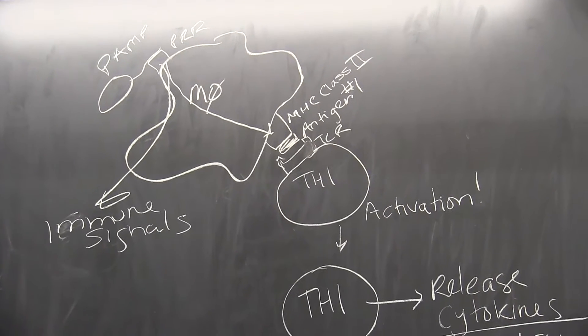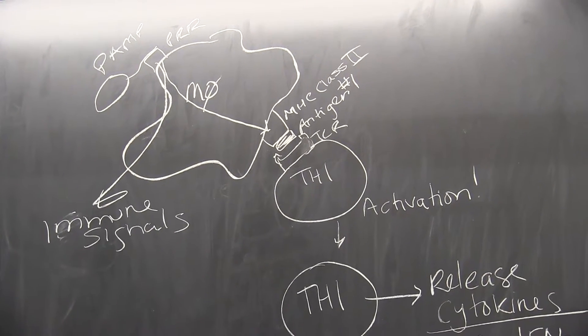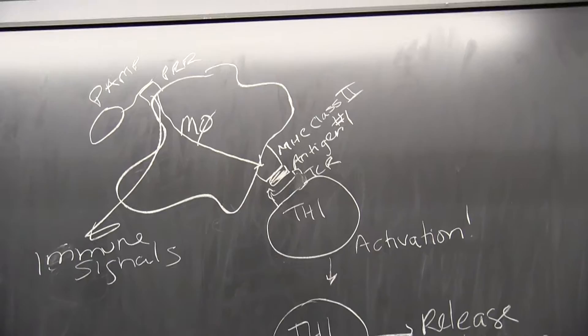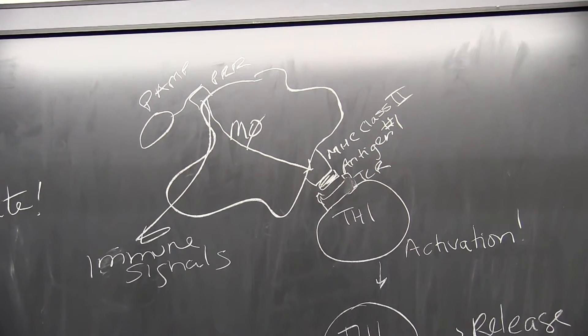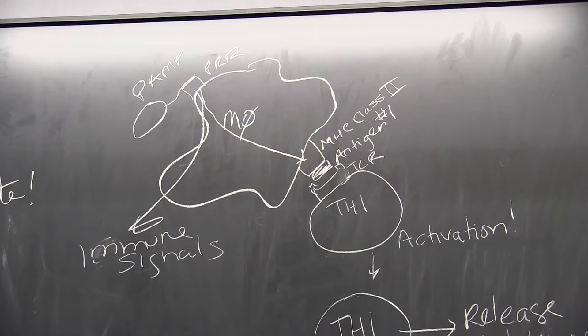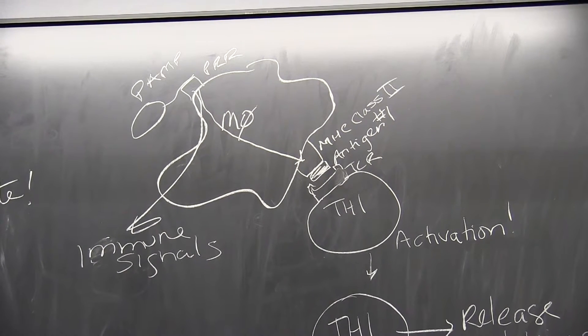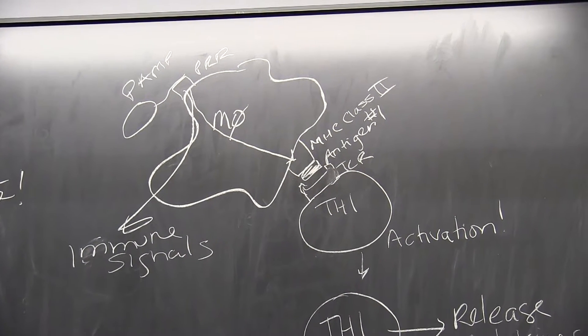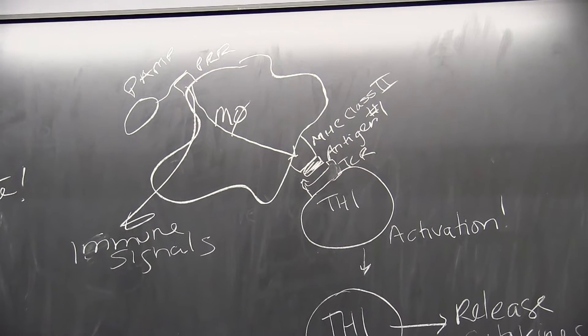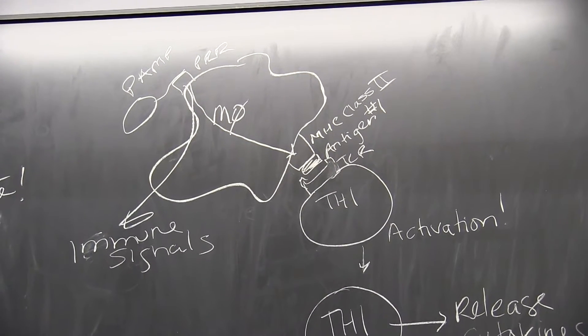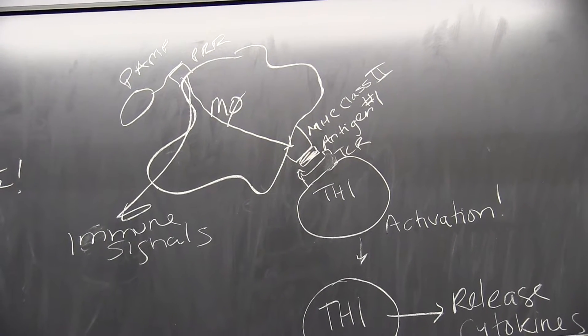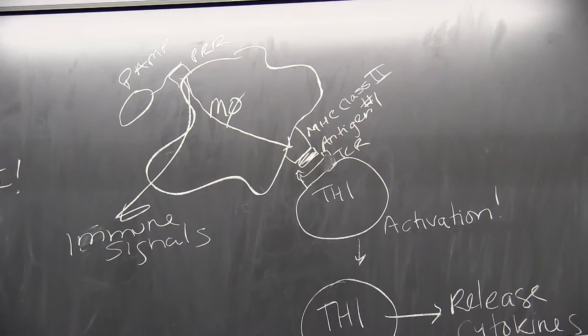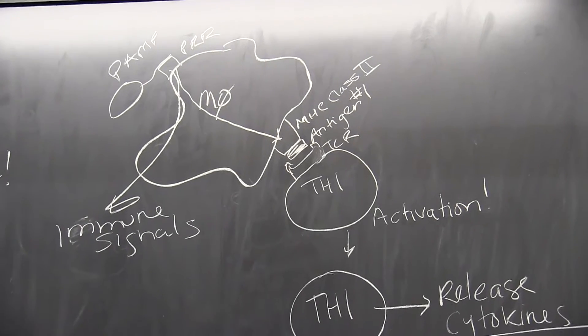Okay, now we're going to put the entire Th1 pathway together. So up here we have our macrophage, and on the surface of the macrophage is our pattern recognition receptor, aka PRR. The PRR is there to recognize patterns associated with pathogens, so that's PAMP, pathogen-associated molecular pattern.